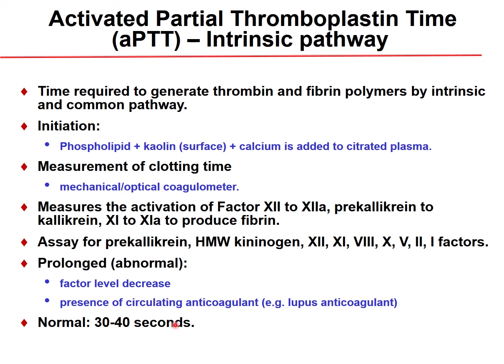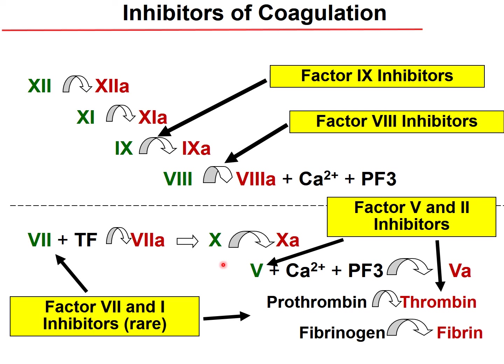APTT was formerly used to monitor heparin dosing, but today low molecular weight (fractionated) heparin does not require monitoring. There can also be autoimmune antibodies developed against factors 8, 9, or 7, lowering their levels. For example, factor 8 deficiency can develop in women through autoimmune mechanisms. These inhibitors of coagulation pathways must be excluded.